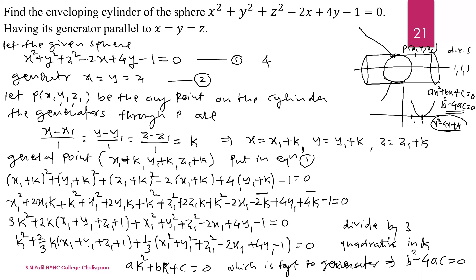Following the working rule, we write the given equation of the sphere and the generator. Let P = (x₁, y₁, z₁) be any point on the cylinder. Then the generator through point P is: (x − x₁)/1 = (y − y₁)/1 = (z − z₁)/1. Finding x, y, z from this gives the general point. These general points lie on the sphere, so they satisfy equation 1: x² + y² + z² − 2x + 4y − 1 = 0.